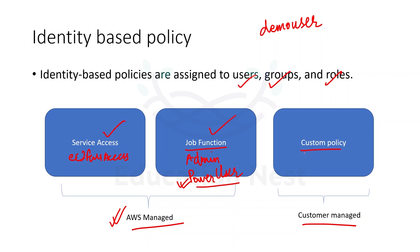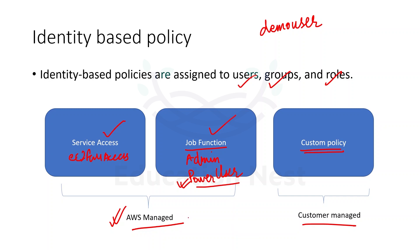Then we have custom policies, where we can create our own policies. If any of the AWS managed policies do not fulfill our requirement, we can go with a custom policy and create our own. The thing about AWS managed policies is they cannot be edited or deleted, whereas you can edit and delete your customer managed policies.